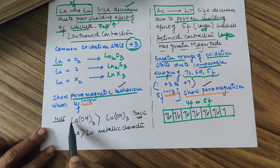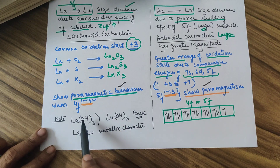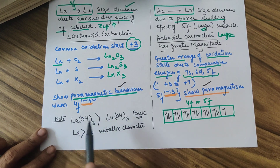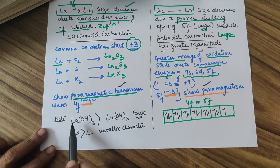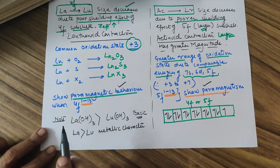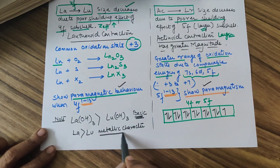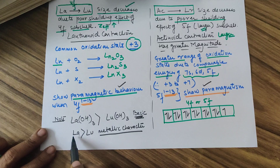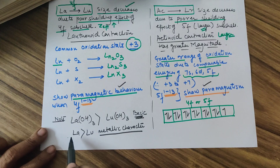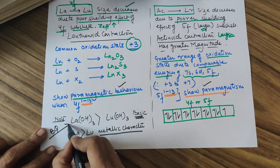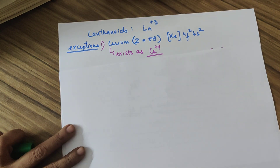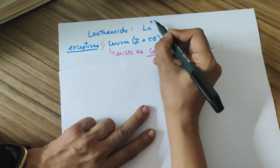As we move from lanthanum to lutetium, lanthanum is larger and more metallic, so its hydroxide is more basic. Lutetium is smaller and less metallic, so its hydroxide is less basic. Therefore, the basic character of lanthanum hydroxide (first member) is greater than that of lutetium hydroxide (last member). This has been a board exam question.